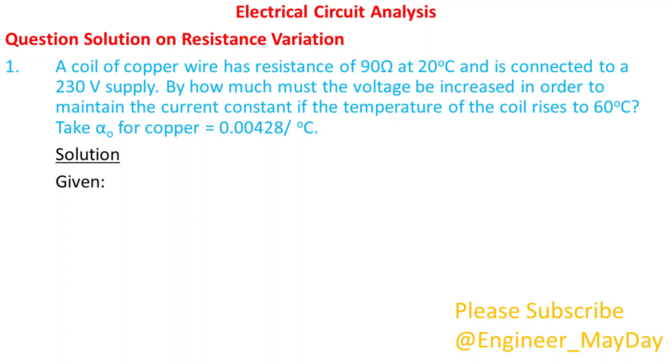Solution. Given: R20 equals 90 ohms, T1 equals 20 degrees Celsius, V1 equals 230 volts, T2 equals 60 degrees Celsius, alpha 0 equals 0.00428 per degrees Celsius.